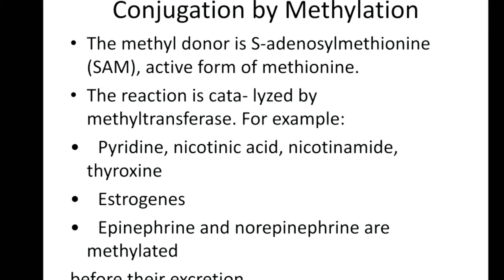Conjugation with a methyl group is called methylation. The donor of the methyl group is SAM (S-adenosylmethionine), the active form of methionine. SAM donates the methyl group in conjugation reactions involving pyridine, nicotinic acid, nicotinamide, thyroxine, estrogens, epinephrine, and norepinephrine — all of which are methylated before excretion.